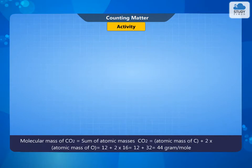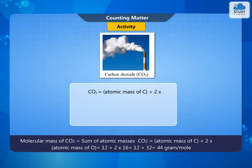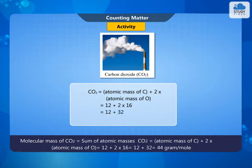Molecular mass of CO2 is equal to the sum of atomic masses. CO2 = atomic mass of C + 2 × atomic mass of O = 12 + 2 × 16 = 12 + 32 = 44 grams per molecule.